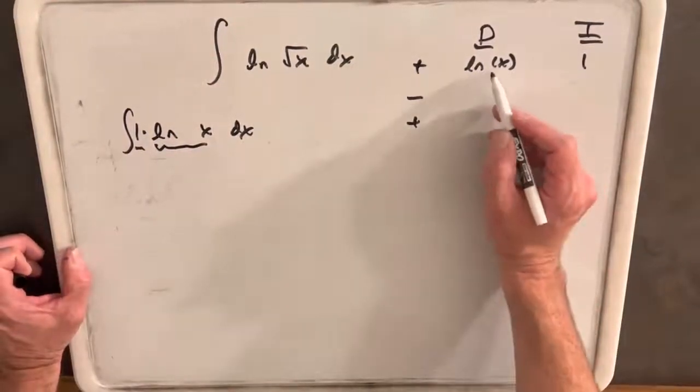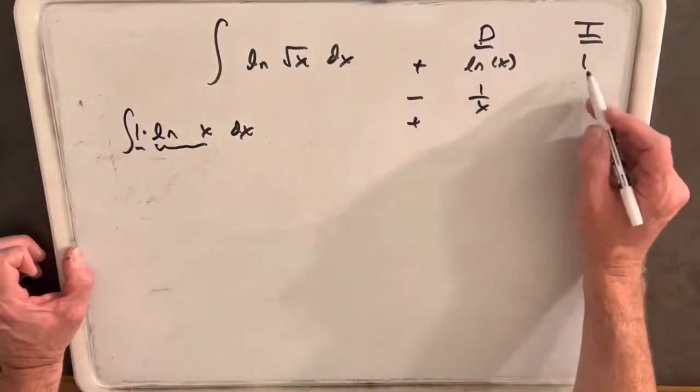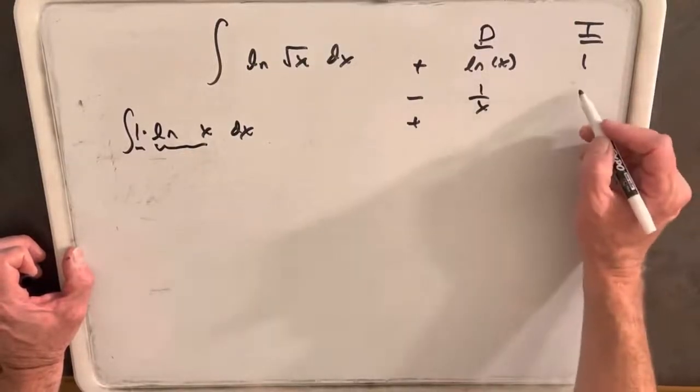And so then the derivative of ln x we do know, which is just 1 over x, and the integral of 1 is x.